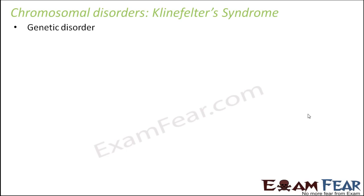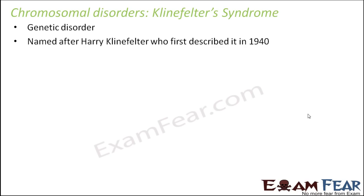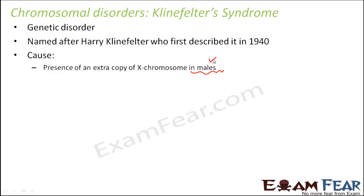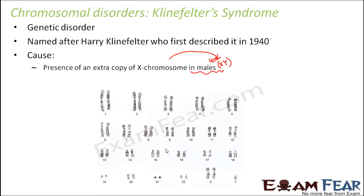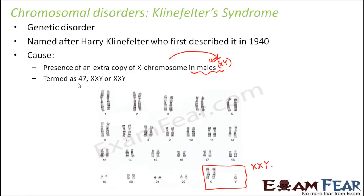The next chromosomal disorder is Klinefelter syndrome. This is again a genetic disorder, named after Harry Klinefelter who first discovered it in 1940. The cause is the presence of an extra X chromosome in males. In a normal male, the sex chromosomes are XY. With one extra copy of X, it becomes XXY. So the total chromosome count is now 47 instead of 46, and the syndrome is also known as 47XXY.